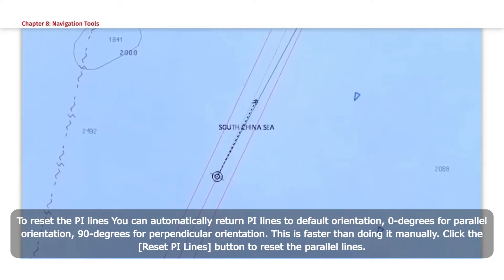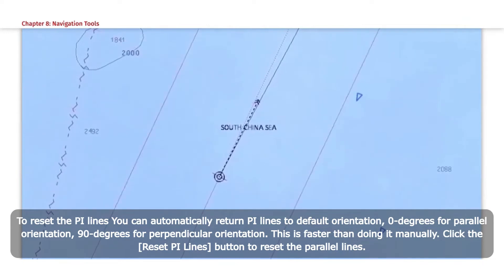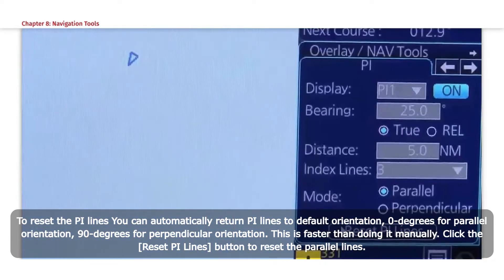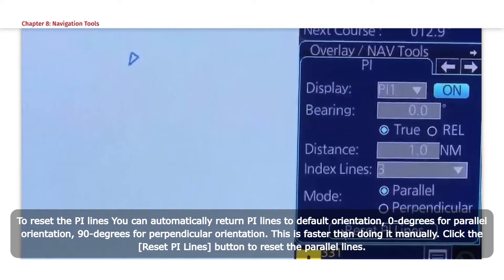How to Reset the PI Lines: To reset the PI Lines, you can automatically return PI Lines to default orientation - 0 degrees for parallel orientation, 90 degrees for perpendicular orientation. This is faster than doing it manually. Click the Reset PI Lines button to reset the parallel lines.